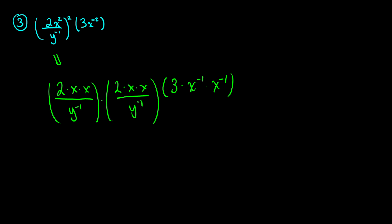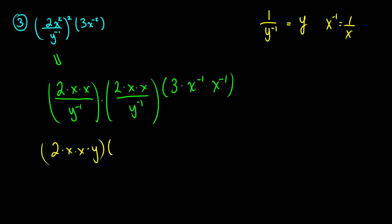At this point, y to the negative 1 is the same as just y flipped to the numerator, and x to the negative 1 is 1 over x. So we end up with 2 times x times x times y on top, and 2 times x times x times y on top again from the second factor, multiplied by 3 over x times x on the bottom. Whenever you see a negative exponent, you flip that variable to the other side of the fraction and it becomes positive.